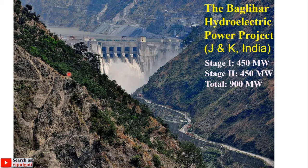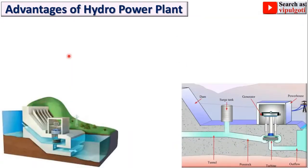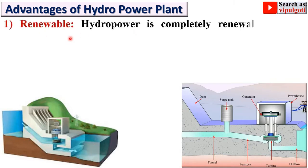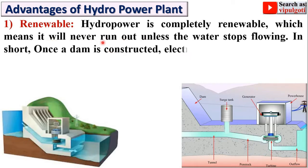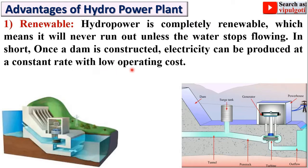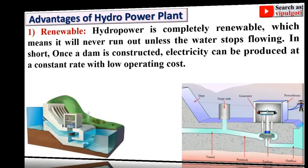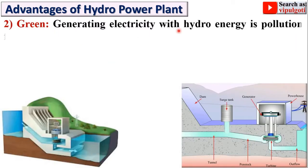Now let's start with the advantages of hydro power plants. First: Renewable. Hydro power is completely renewable, which means it will never run out unless the water stops flowing. Once a dam is constructed, electricity can be produced at a constant rate with low operating cost.